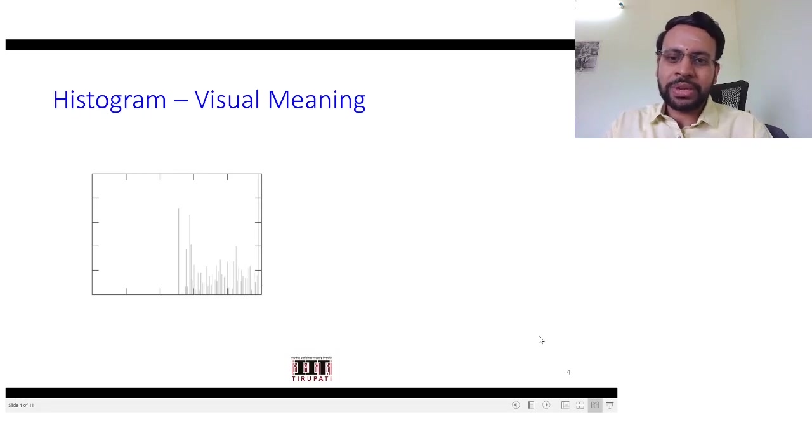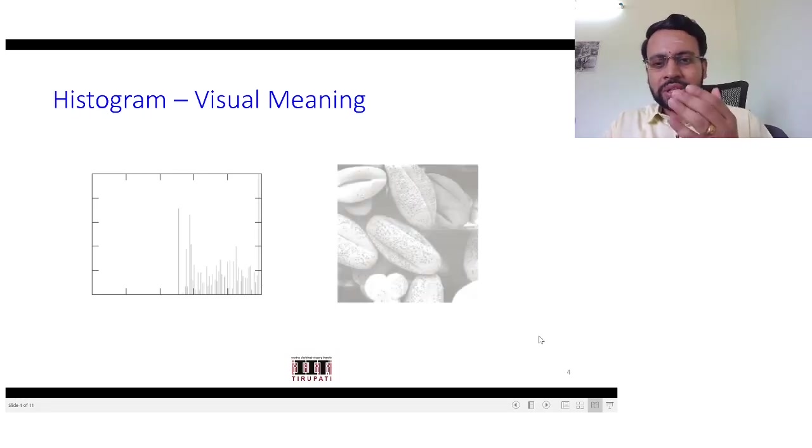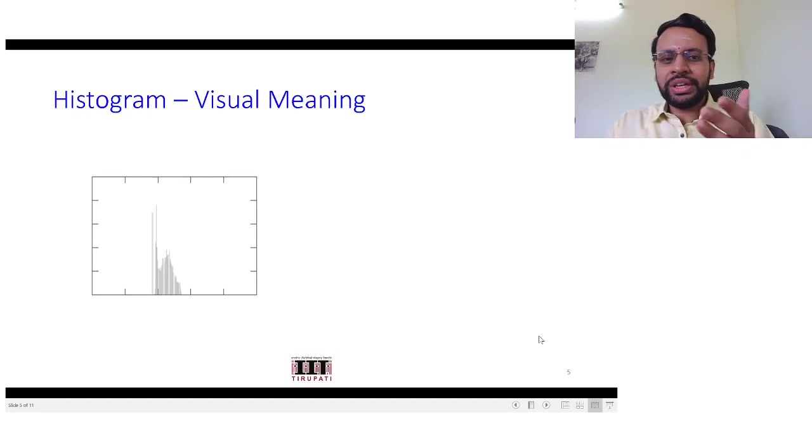That's what you could interpret from this histogram. Let's see how its corresponding image would look like. As we have rightly analyzed, this image is on the bright side and the contrast is somewhat limited, somewhere from the middle value to the highest intensity value.